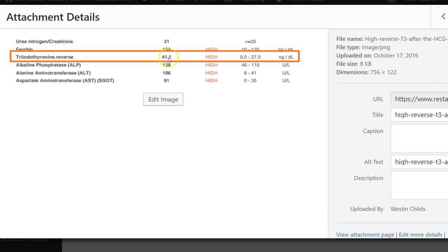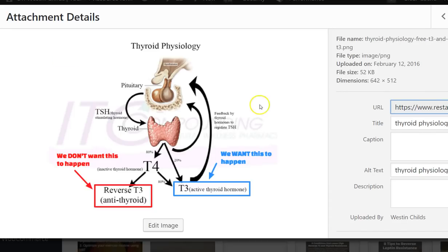Now what you want to aim for is a value that is less than 15. So if you look from 9 to 27, you want yours to be less than 15. If it's higher than that, that's an indication that perhaps your body isn't utilizing that conversion process appropriately. So it's probably taking more of that T4 and turning it directly into reverse T3 as opposed to T3. So that's the value of ordering this test because then you can make decisions based off of that information. And that's what you do. It changes how you look at treatment and management.